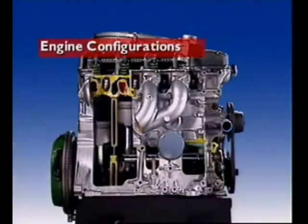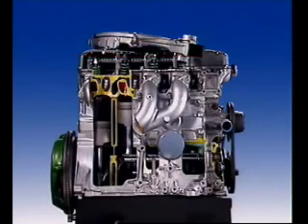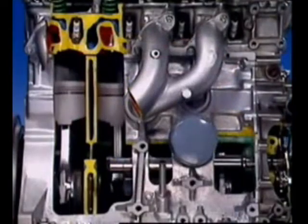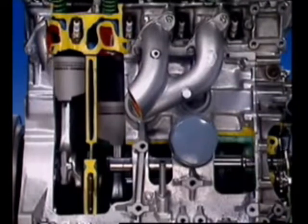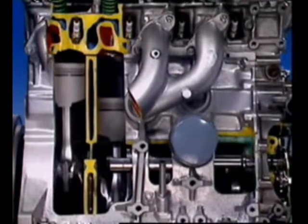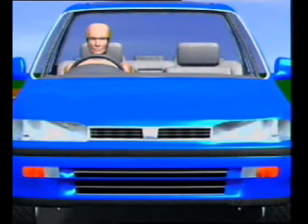The way engine cylinders are arranged is called the engine configuration. Inline engines have the cylinders in a line. This design creates a simple to cast engine block. In vehicle applications, the number of cylinders is normally from 2 up to 6.